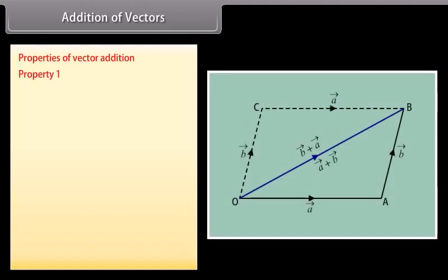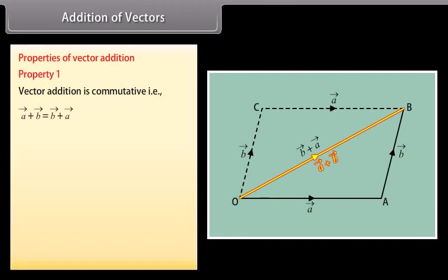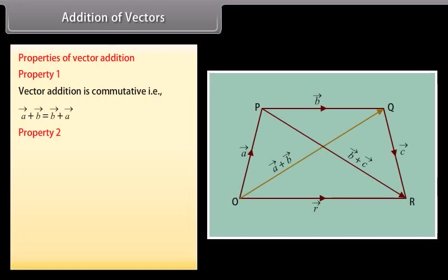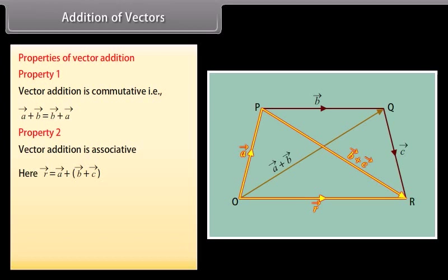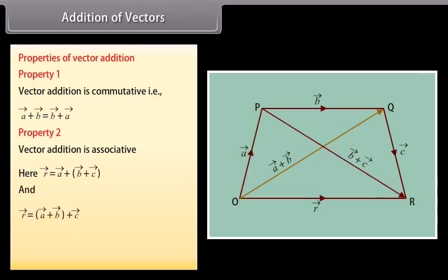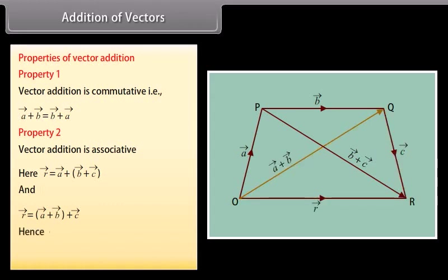Properties of vector addition. Property 1: vector addition is commutative, that is, vector A plus vector B equals vector B plus vector A. Property 2: vector addition is associative. Here, vector R equals vector A plus vector B plus vector C, and vector A plus (vector B plus vector C) equals (vector A plus vector B) plus vector C.